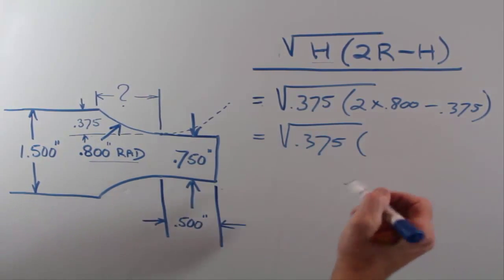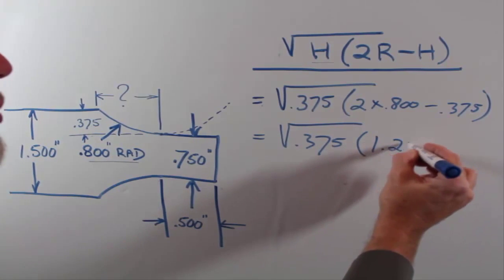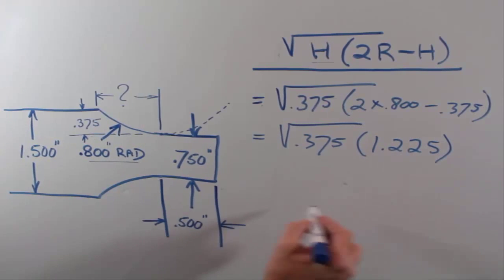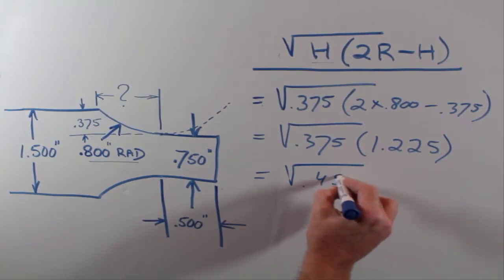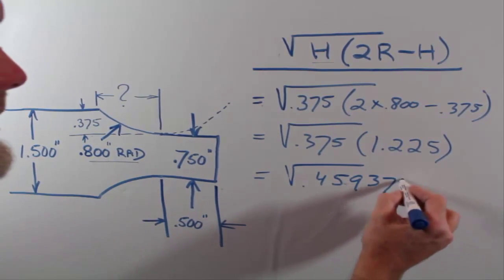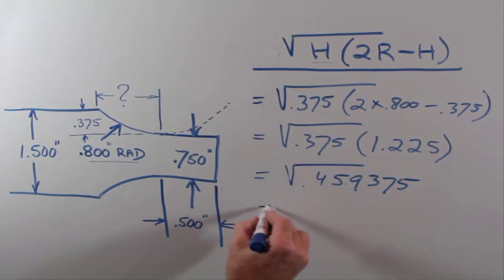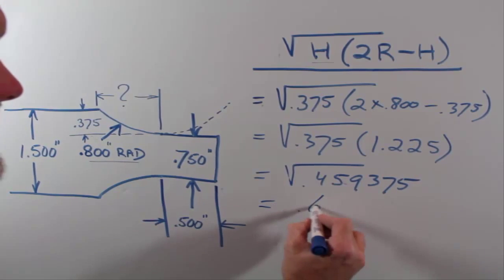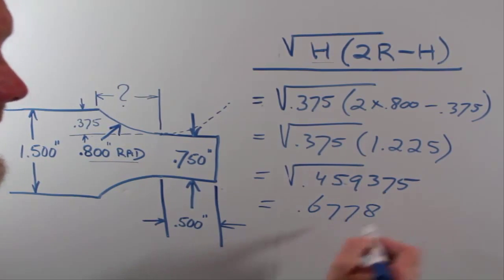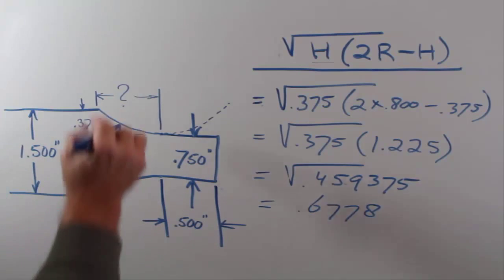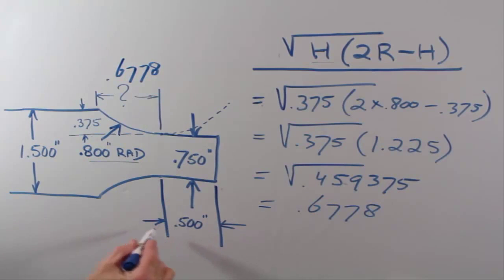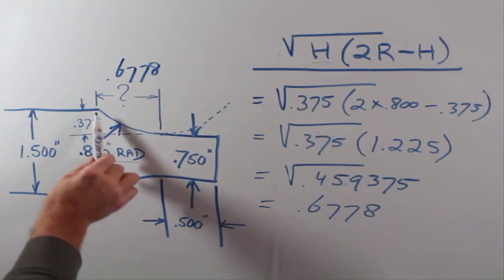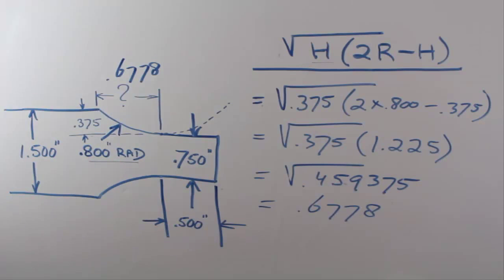Working that out: 0.375 times 1.225 gives us 0.459375. Taking the square root of 0.459375, we get a distance of 0.6778 (rounded off). So this distance is 0.6778". We add the half inch (0.500") plus 0.6778" to get the endpoint of our radius. That is how you calculate a chord — hope that was helpful!